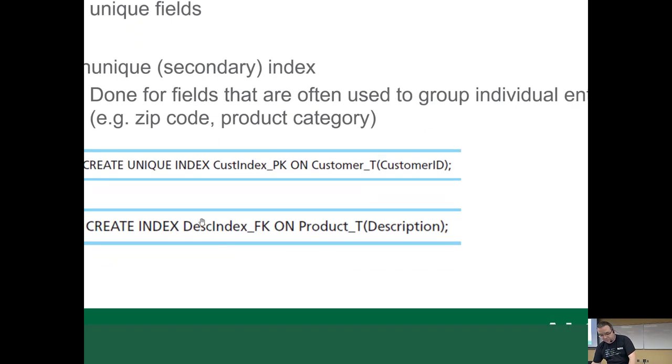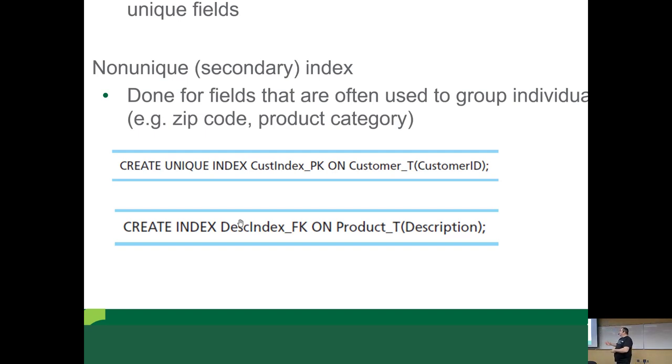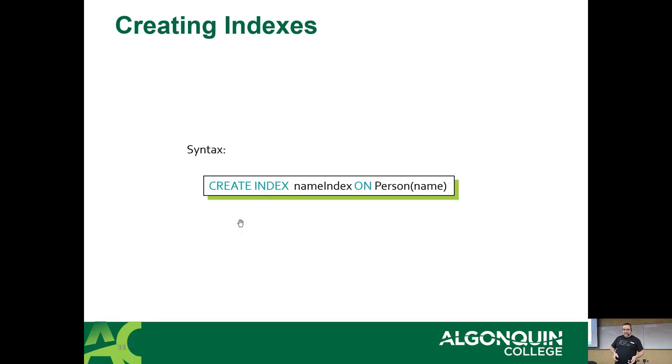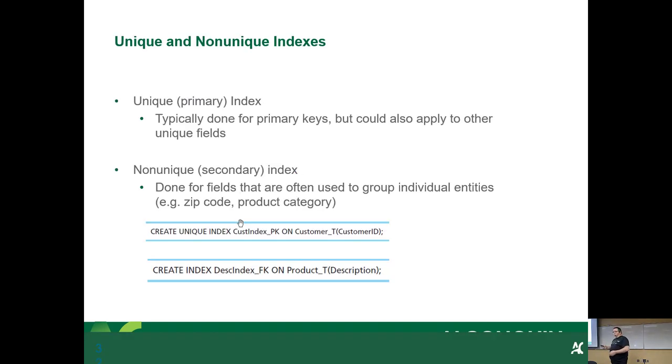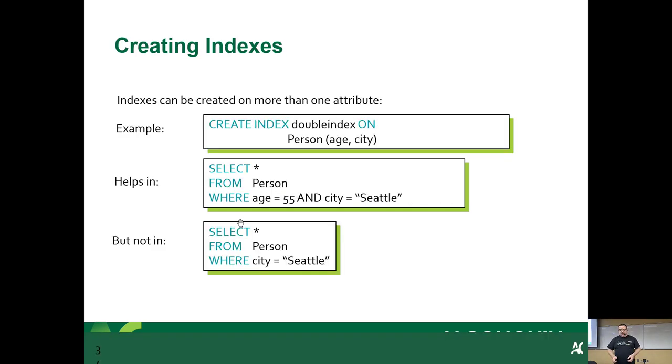And the syntax is there at the bottom there, which is pretty straightforward. So this is the two kinds right there. So you got create unique index. You give it a name. So you got create unique index. What's in uppercase is the SQL syntax keywords. The next thing is the name of the index on the name of the table and the field or fields that are being indexed. And if it's a non-unique, you just skip the word unique.